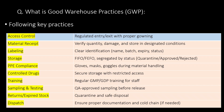What is Good Warehouse Practice or GWP? GWP includes access control, material receipt, labeling, storage, PPE compliance, controlled drugs, training, sampling and testing, returns or expired stock, and dispatch management.